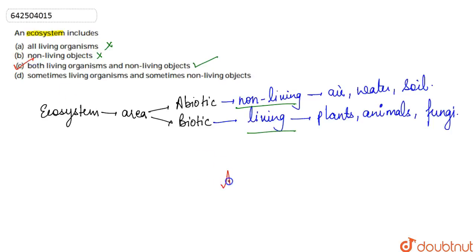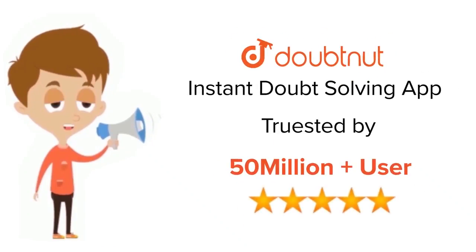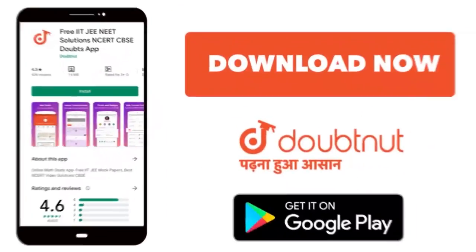The correct answer is going to be option C. For class 6 to 12, IIT-JEE, and NEET level, trusted by more than 5 crore students. Download Doubtnet app today.